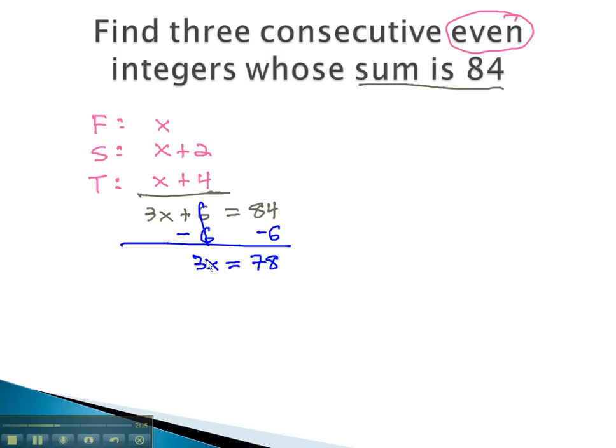Finally, to get the x alone, we divide both sides by 3, and x is equal to 26, an even number. Again, this is our first number, 26. The second number is 2 more than that, 28.